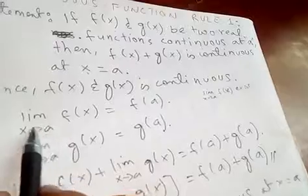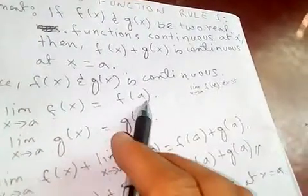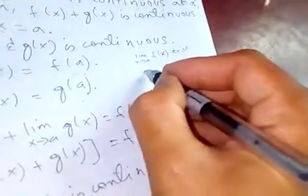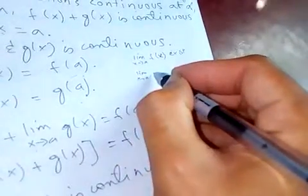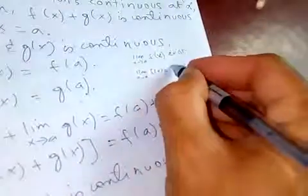This tends to f of a, it exists. And limit x tends to a f of x is equal to f of a.